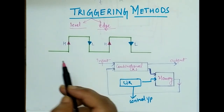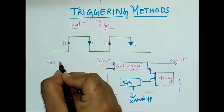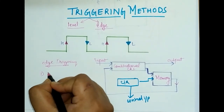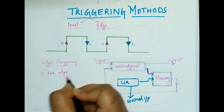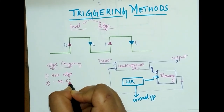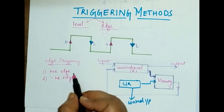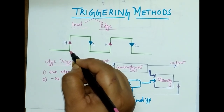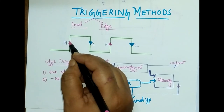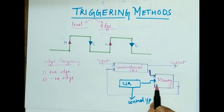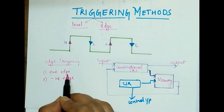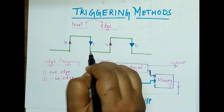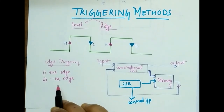Now what is edge triggering? Edge triggering is of two types: positive edge triggering and negative edge triggering. In positive edge triggering, when the signal goes from low to high, at that instant of time the memory circuit is triggered. In negative edge triggering, when the signal goes from high to low, at that instant the circuit is triggered.